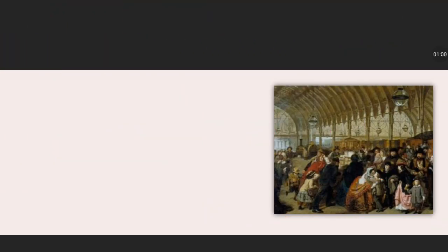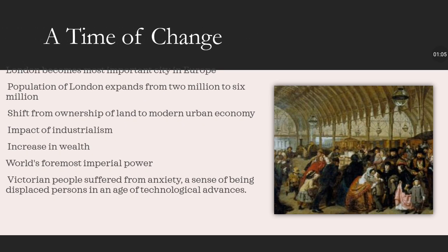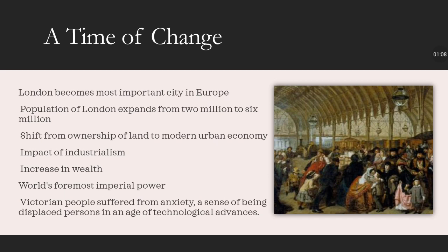The Victorian period was the time of change for England. During this time, London became the most important city in Europe. The population of London expanded from 2 million to 6 million people. The shift from ownership of land to a modern urban economy started. The impact of industry started, the increase of wealth started, and England became the world's foremost imperial power.